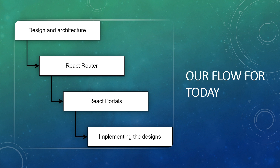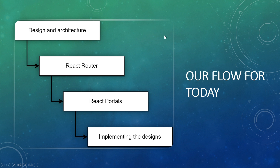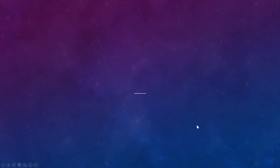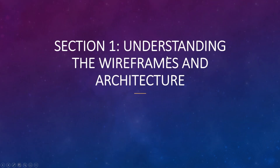Finally, in section four, we'll implement the designs — writing all the CSS, animations, and styling. By section three we'll already have a working app, but the full styling comes in section four. Let's end this intro video here. See you in the next video where we start the first section: understanding the wireframes and app architecture. Bye bye!